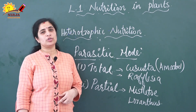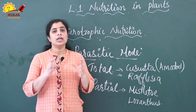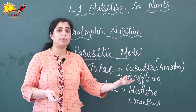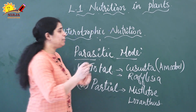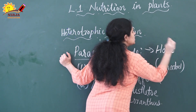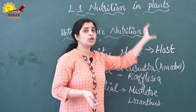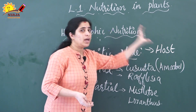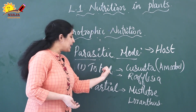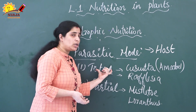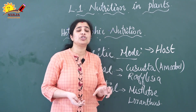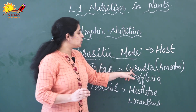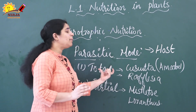Next is the second mode of heterotrophic nutrition — parasitic mode of nutrition — in which plants depend on other green plants for food, deriving food and nutrients from them. The green plants providing food are known as the host. Parasitic plants can be divided into two types: total parasitic plants and partial parasitic plants. In total parasitic plants, the parasites derive food and nutrients completely from the host plant — photosynthesis does not occur in them. Examples are Cuscuta and Rafflesia.